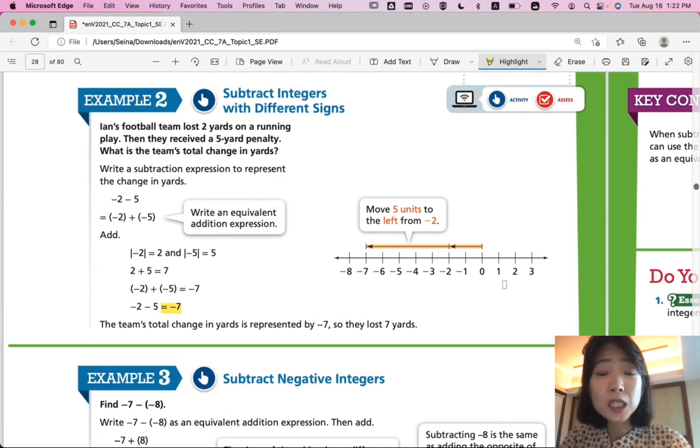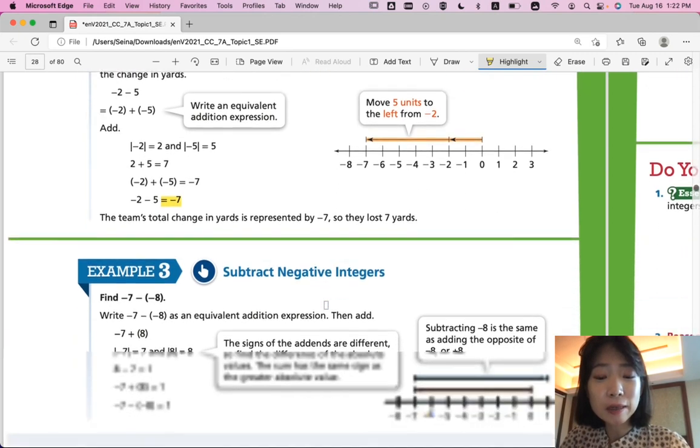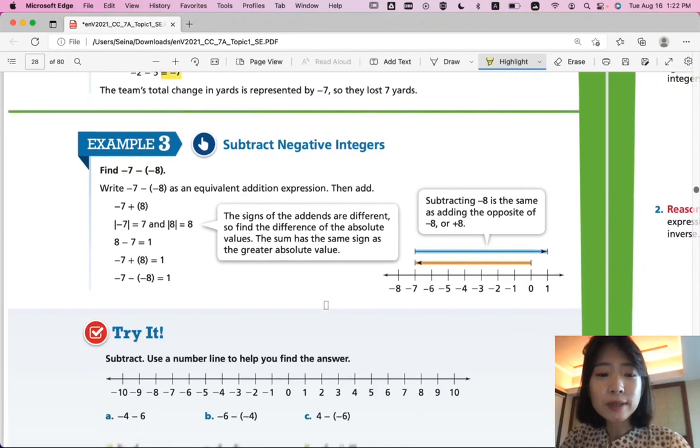So, subtracting with different signs, if you change them to addition, they become the same signs. And then you can just add them and keep your sign as negative. Example 3. Subtract negative integers.